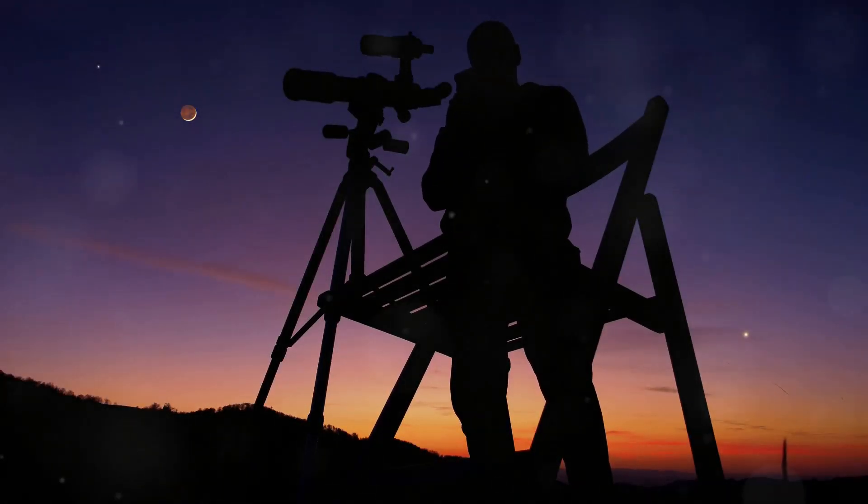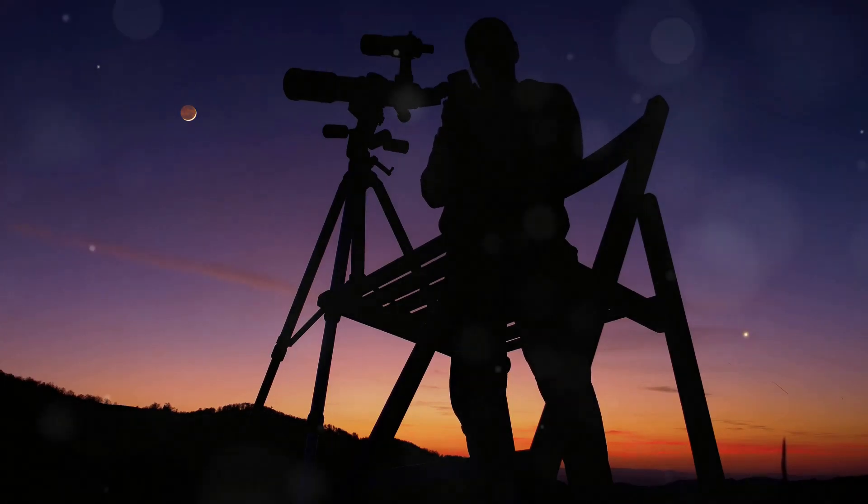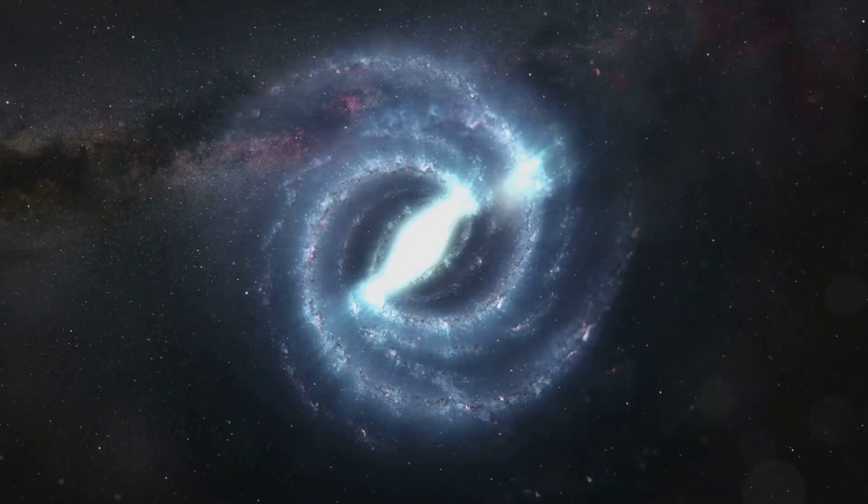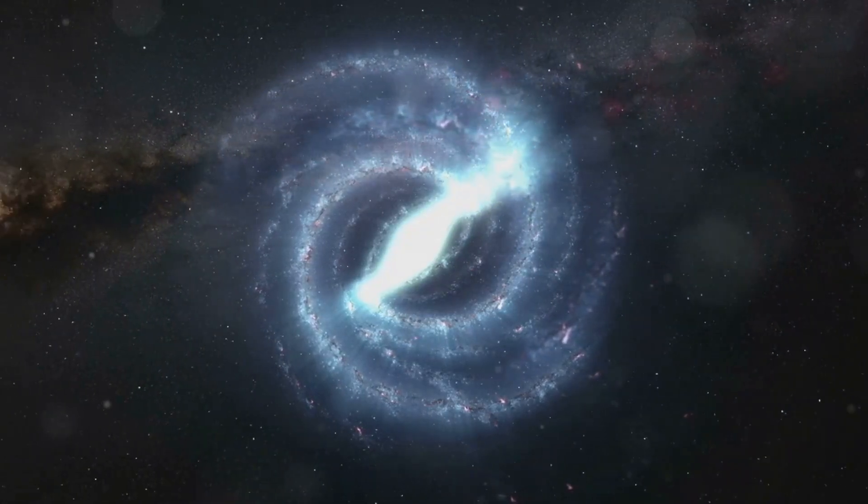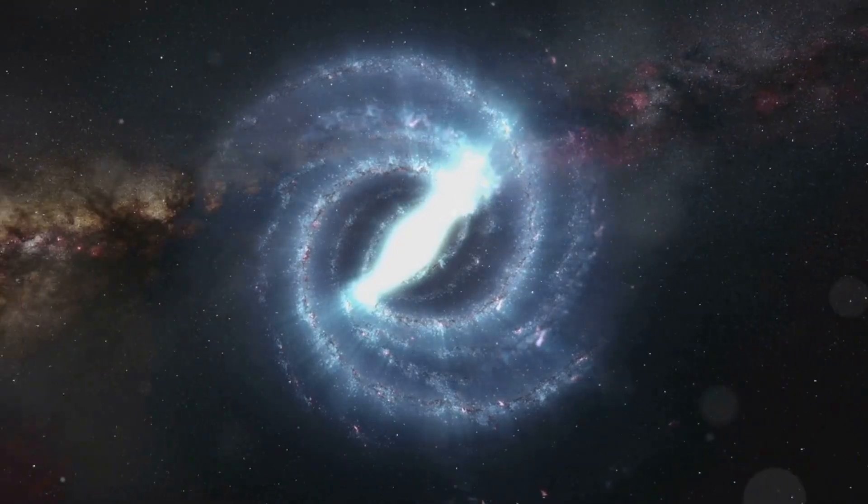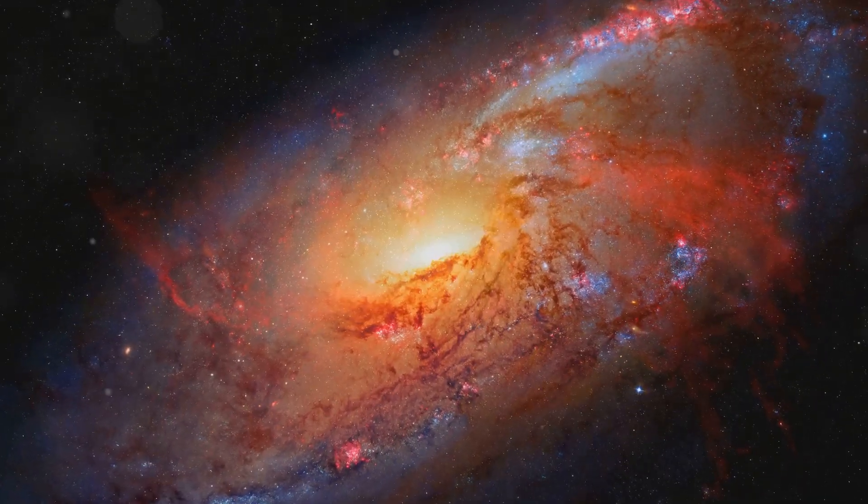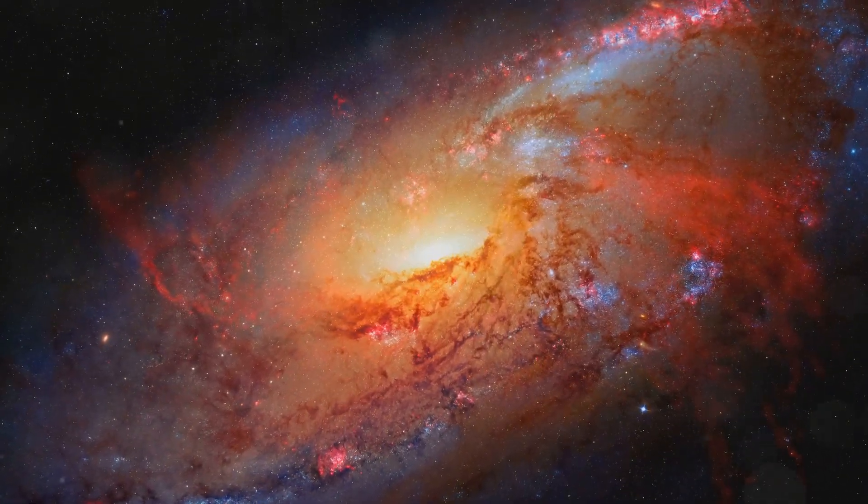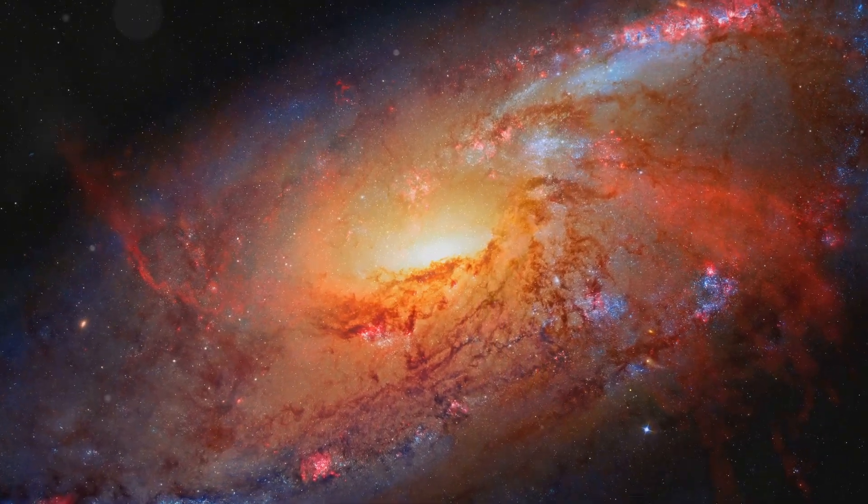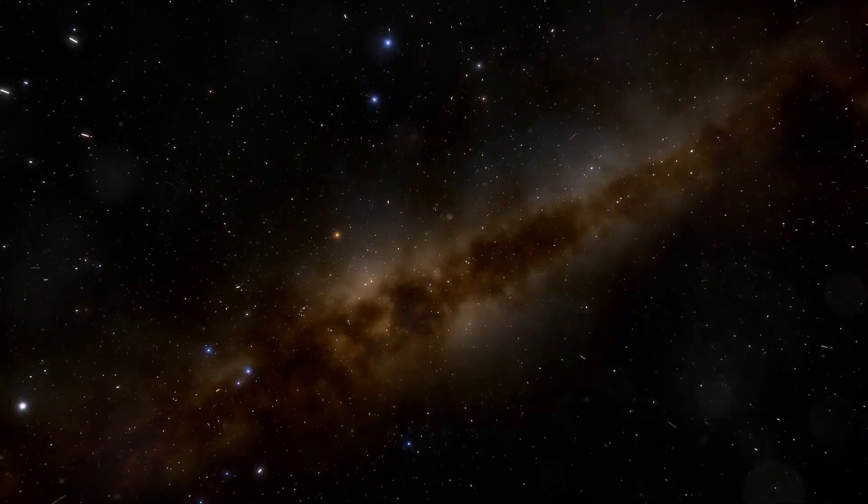As we gaze into the cosmos, we notice something strange. Galaxies spin faster than they should, given the amount of visible matter they contain. Something unseen is holding them together, an invisible substance that outweighs the stars and planets. We call it dark matter.